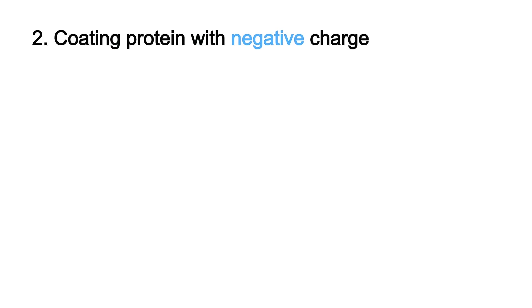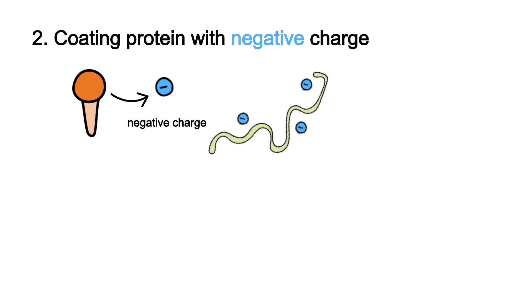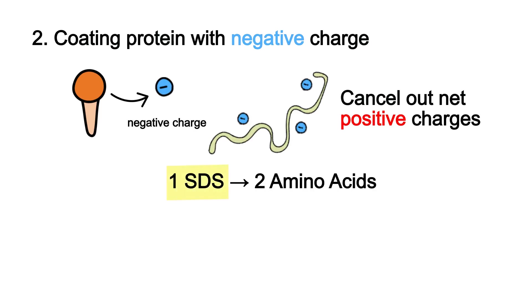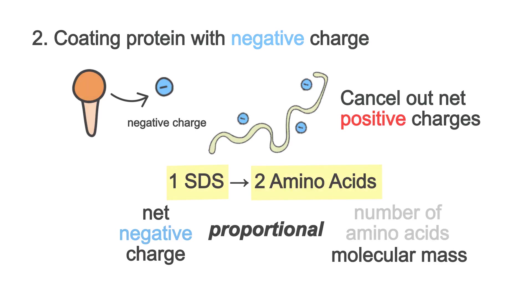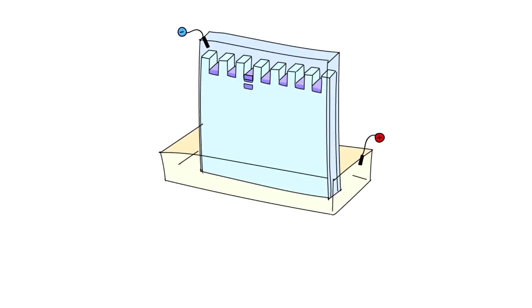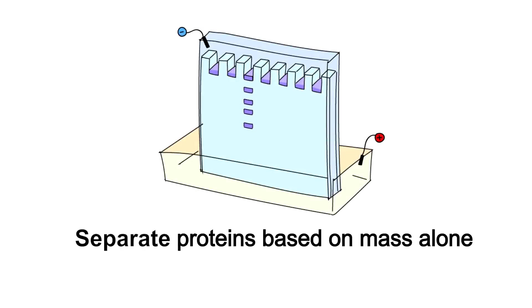Now let's take a look at the second action, which is that SDS coats the protein with a negative charge. Remember that each SDS molecule has a negative charge at its polar head. Thus, any protein coated with SDS gains a strong net negative charge, canceling out any net positive charges. Moreover, approximately one SDS molecule binds to every two amino acids in a protein. So the net negative charge will be proportional to the number of amino acids of the fragment, and thus its molecular mass. The result of all of this is that we can separate the different protein fragments based on their mass alone.